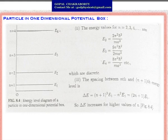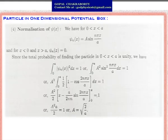The energy level diagram of a particle in a one-dimensional potential box is shown in the figure, illustrating the behavior for n = 1, 2, 3, 4 and so on. The wave function we obtained — ψ = A sin(nπx/a) — is not yet a normalized wave function, because we do not yet know whether the probability is at a maximum or minimum. We need to normalize it.